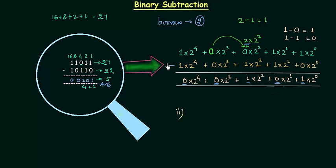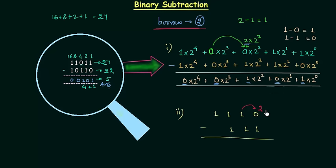Now we will move to the second example. The first binary number is 1110 and the second binary number is 111, and we have to subtract. 0 minus 1: we take borrow from the next bit, so we have 2. 2 minus 1 is 1, and we are left with 0 here. 0 minus 1: we again take borrow, so we have 2. 2 minus 1 is 1, and we are left with 0. So the answer is 0111, which is 7, and 1110 is 14 in decimal.